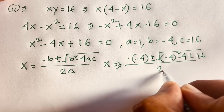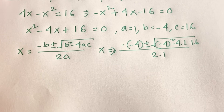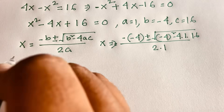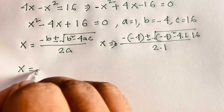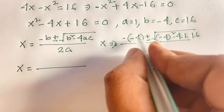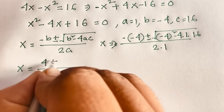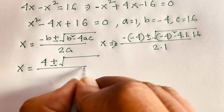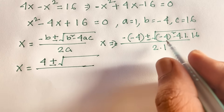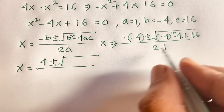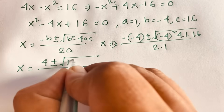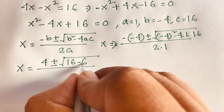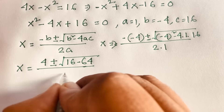Simplifying: x equals positive 4 plus or minus the square root of 16 minus 64, all over 2. That is x equals 4 plus or minus the square root of negative 48, over 2.